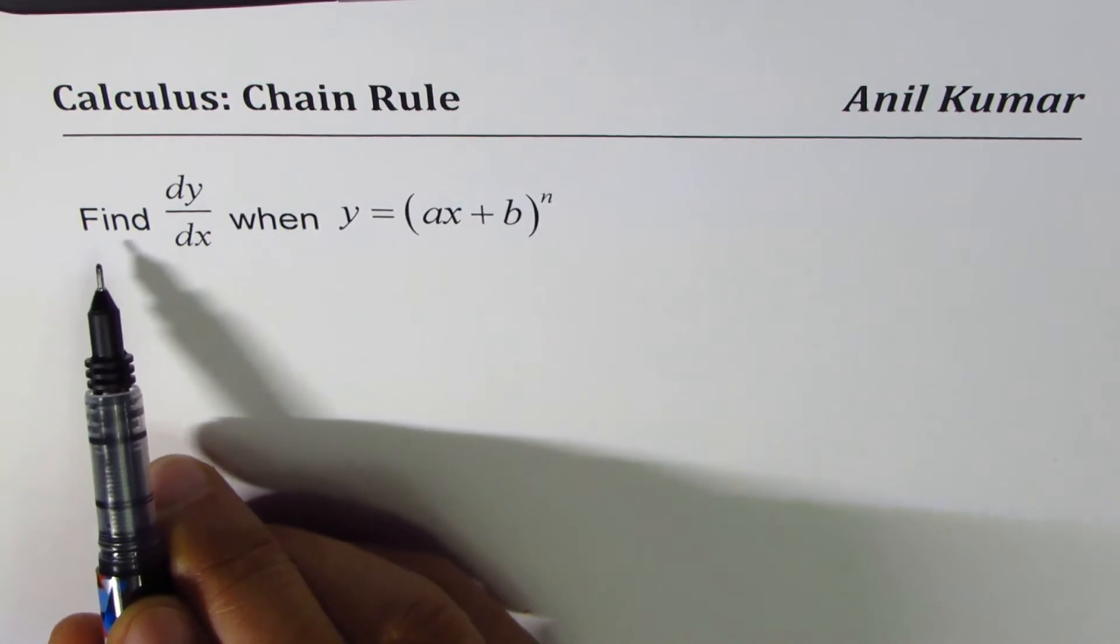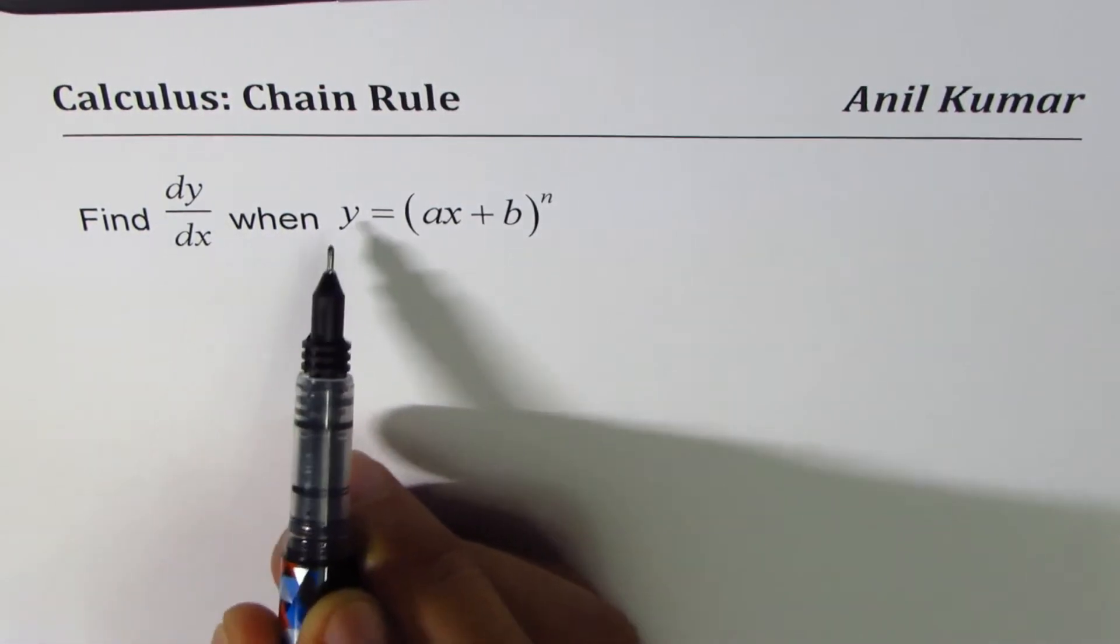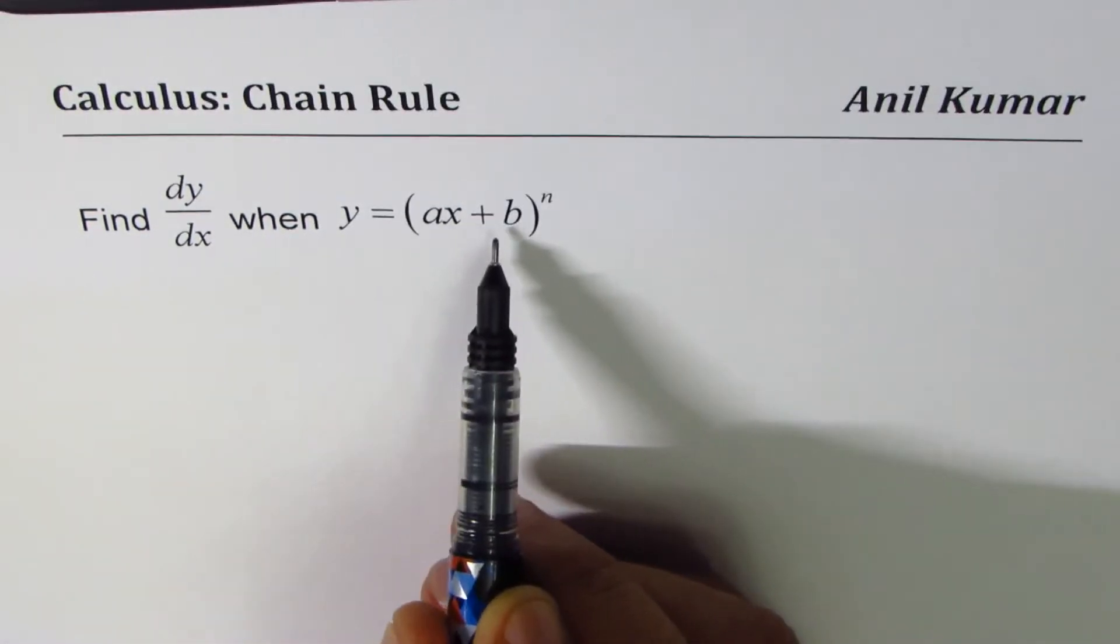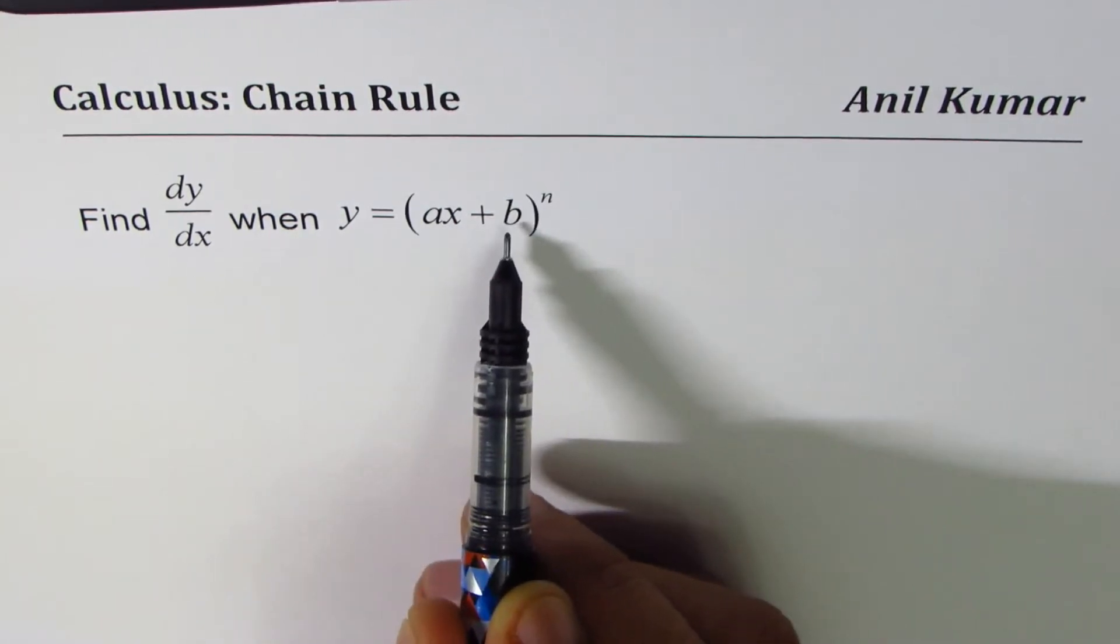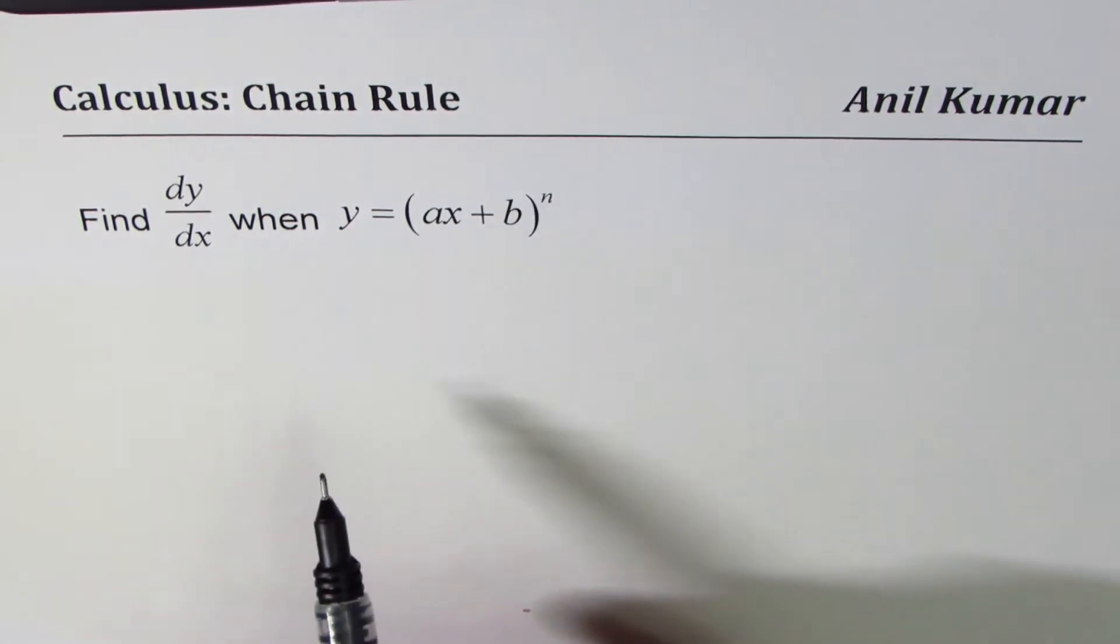The question here is, find dy/dx when y equals ax plus b to the power of n. a and b are constants, and n is any real number.